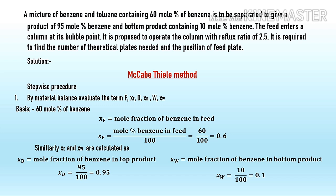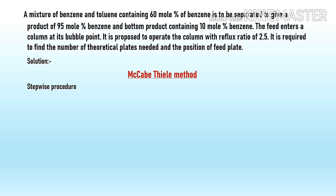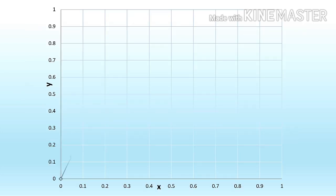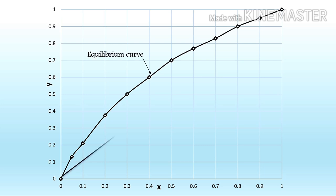The next step is to draw the equilibrium curve and the diagonal using the X-Y equilibrium data. In this example, the equilibrium data (X-Y data) is given, so using this data the equilibrium curve and diagonal can be drawn as shown in the graph.